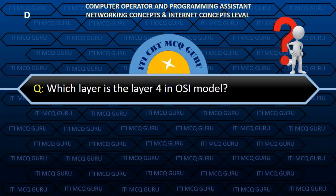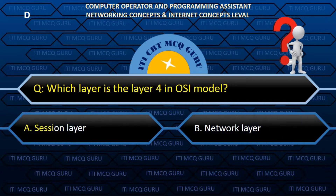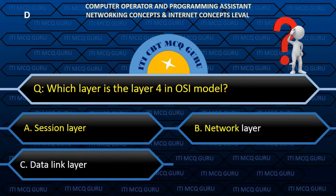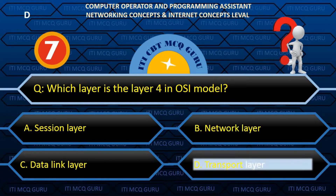Which layer is layer 4 in the OSI model? D. Transport layer.